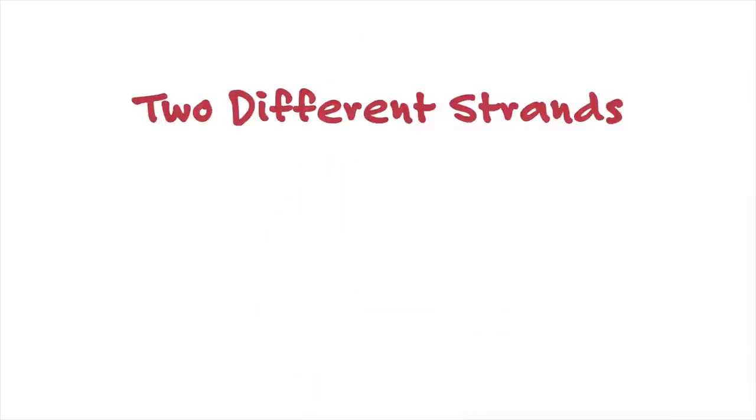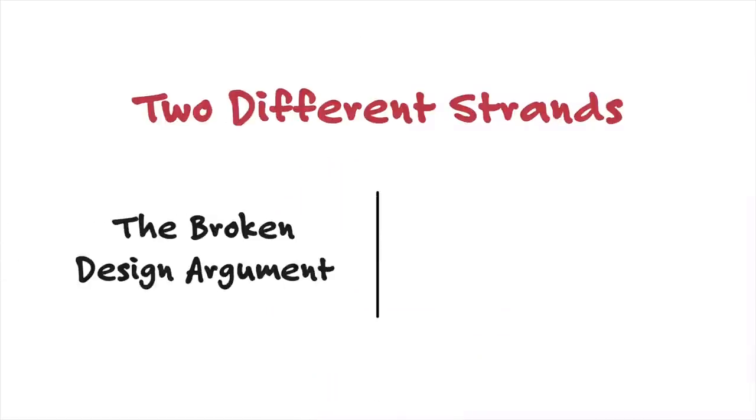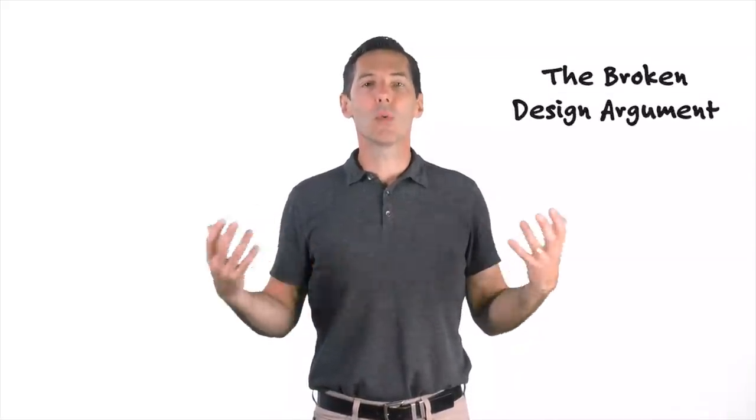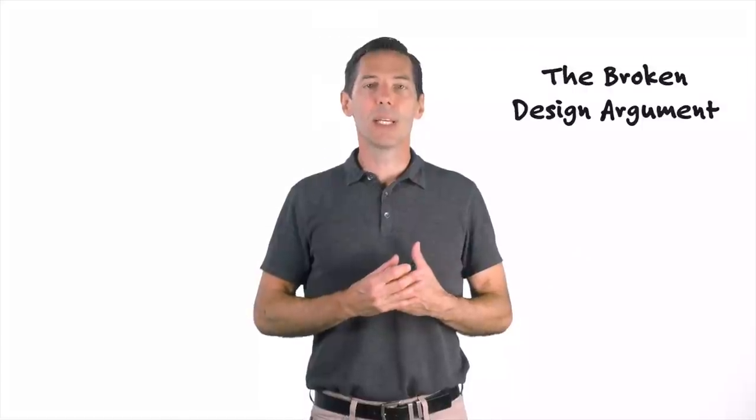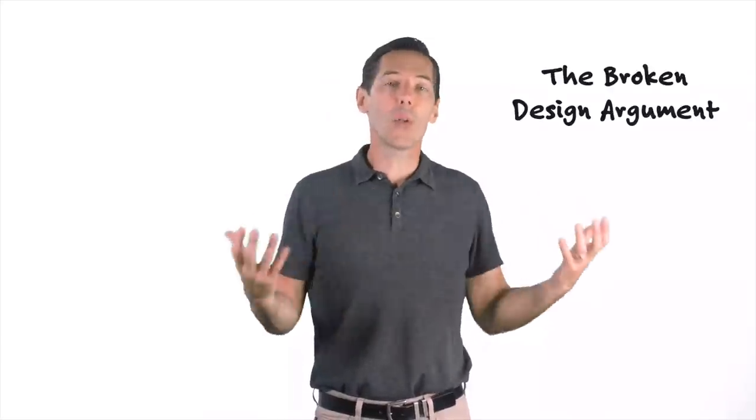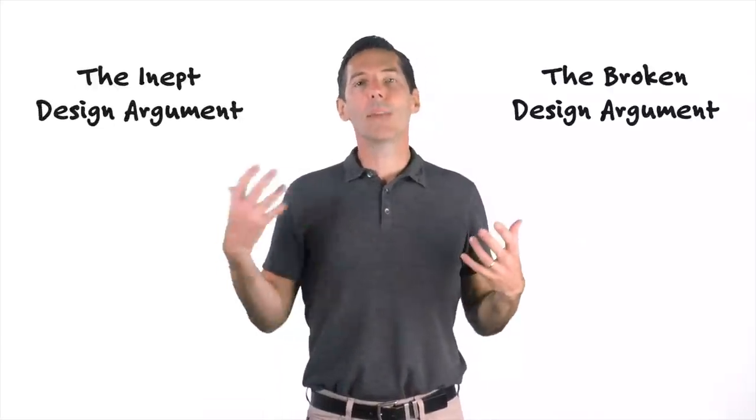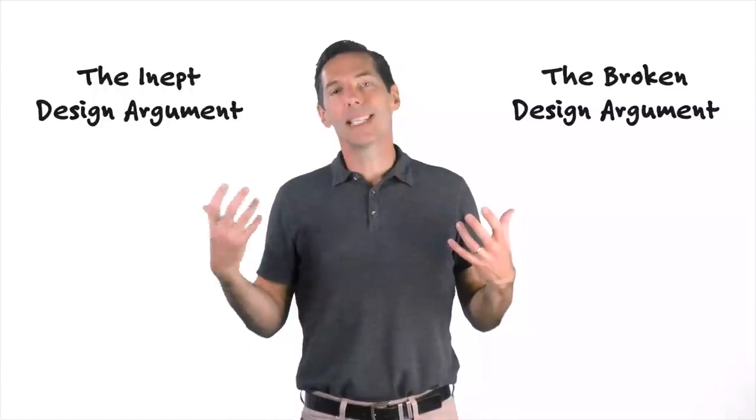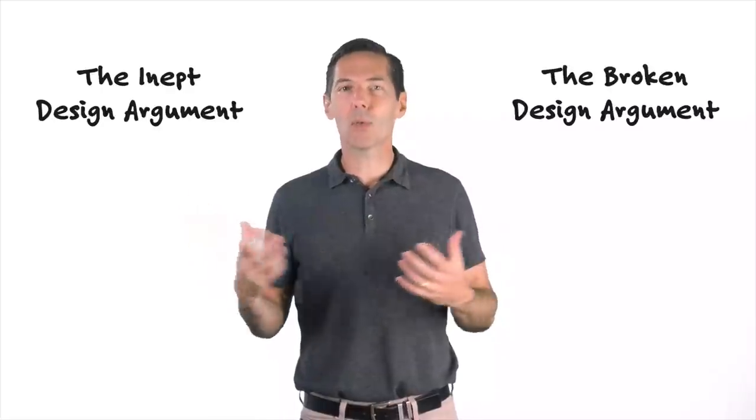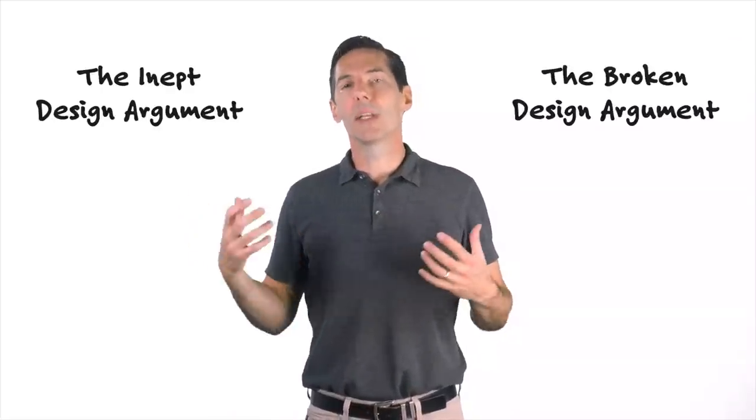Now there's two different strands of this kind of argument. One is really the broken design argument, and the other is the inept or incompetent design argument. So one looks at things like cancer and birth defects, all kinds of things that go wrong that cause death and misery, and asks whether a designing intelligence, whether God would have made life so that all of these things go wrong. And the other one says that actually the details of life suggest that something other than an intelligence put it together, that there's ineptness or strangeness in the design that no designer would have used.